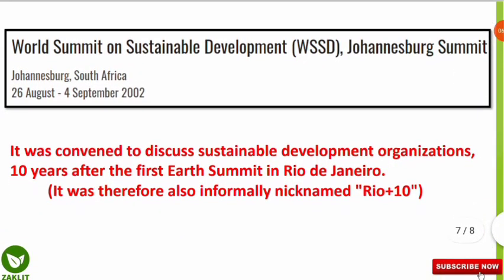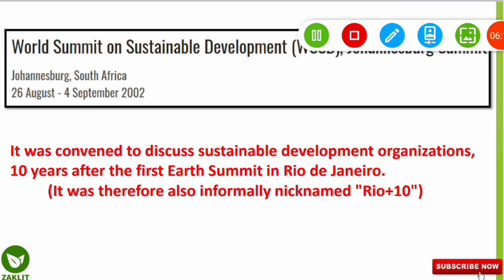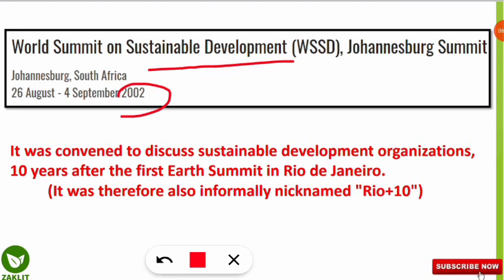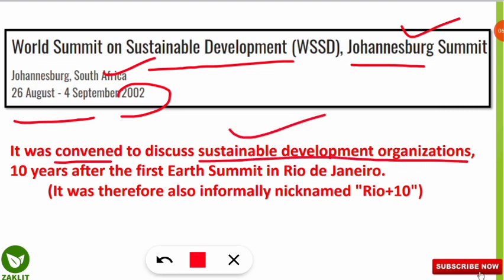Next, we will know about the WSSD. The full form of WSSD is the World Summit on Sustainable Development, which took place in 2002 in Johannesburg, South Africa. It is also known as the Johannesburg Summit, held from 26th August to 4th September 2002. This summit was convened to discuss the organizations working for sustainable development, which was done 10 years after the first Earth Summit — the Rio Summit.